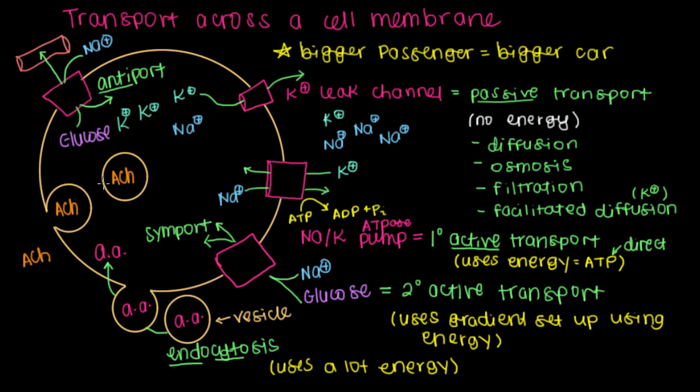So this process where this vesicle came here and then caused the acetylcholine to get out of our cell is called exocytosis. Exocytosis, which is why I call it the opposite of endocytosis, because something is exiting our site or a cell. And this is similar to endocytosis in that it uses a lot of energy to happen.